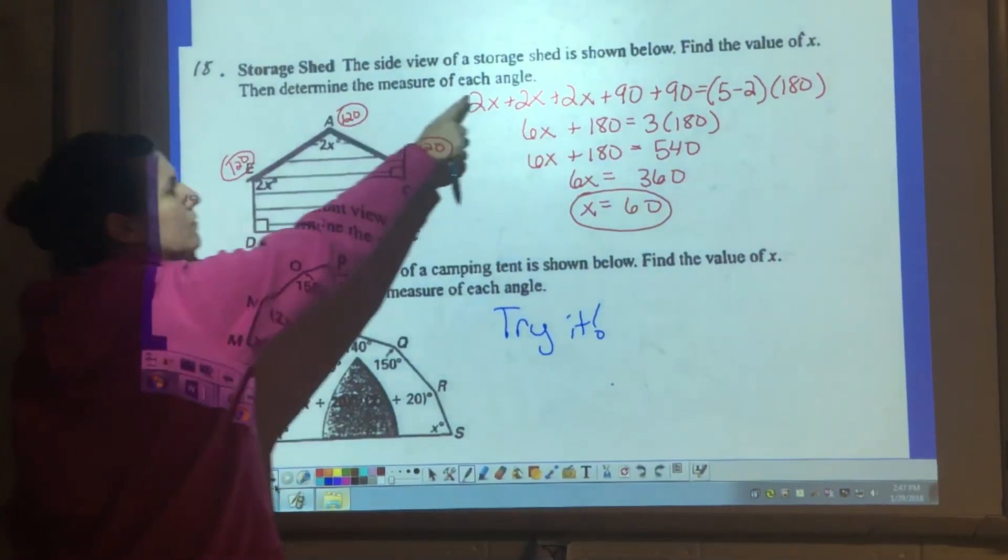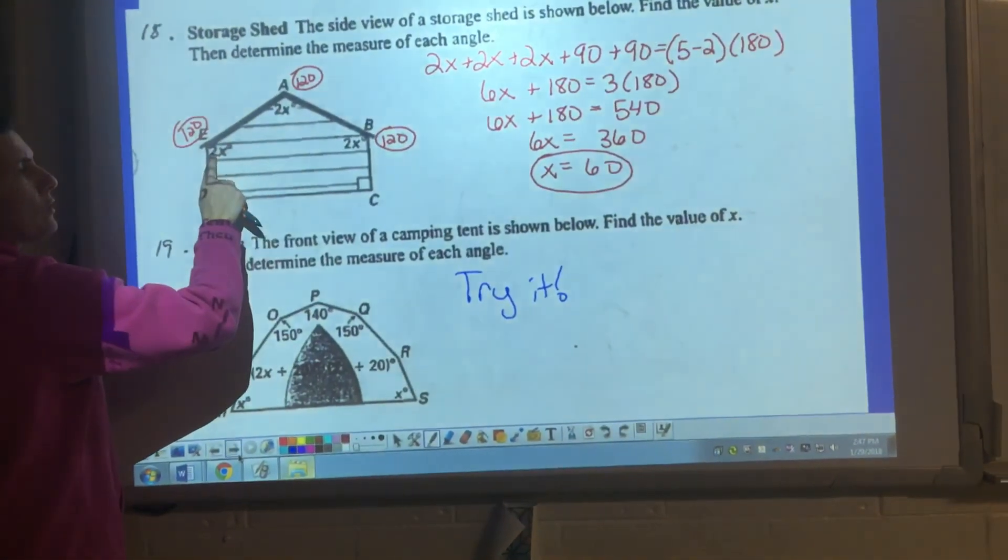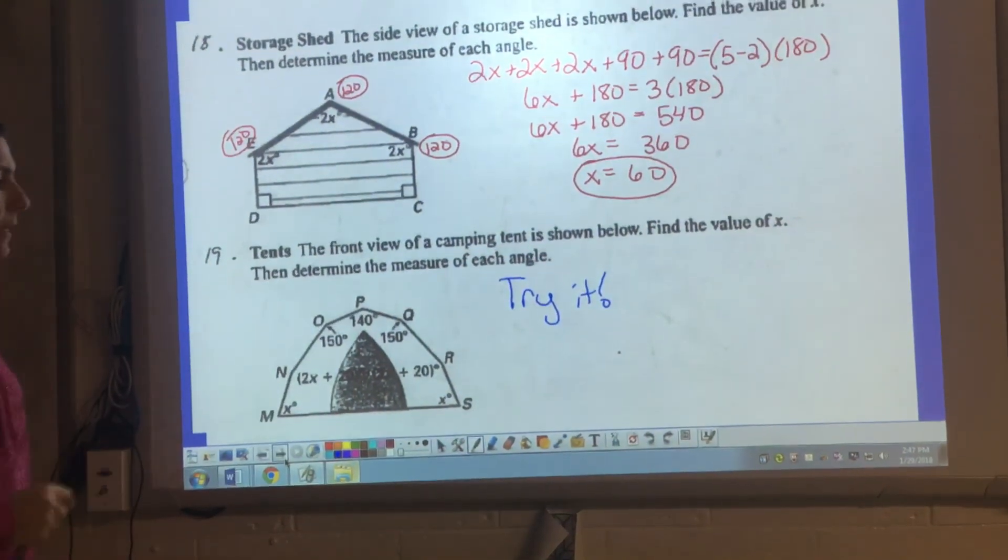And they do ask me to find the measure of each angle. So when I plug 60 back in, these two angles are 120. Actually, these three angles are 120. And of course, those end up giving me 90.